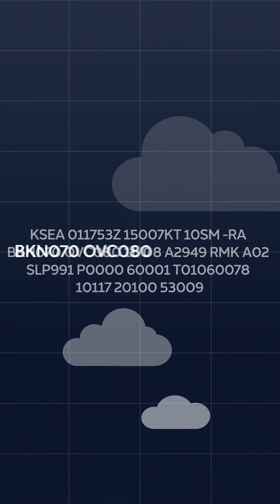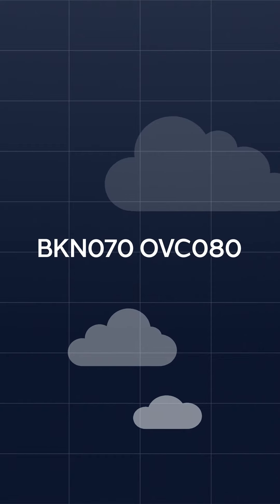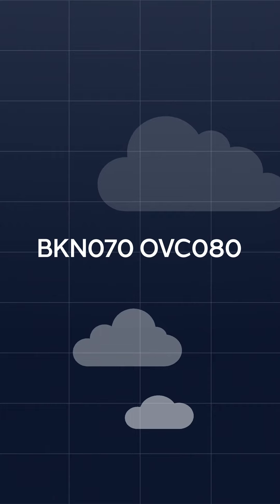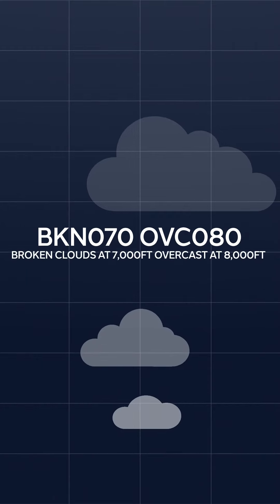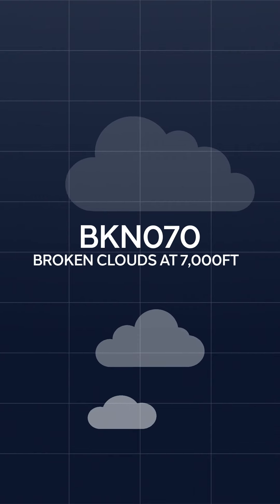Here we have BKN 070 and OVC 080. This tells us that the clouds are broken at 7,000 feet and overcast at 8,000 feet. By definition, our ceiling would be the lowest layer at 7,000 feet. That's all for this week — we'll see you guys.